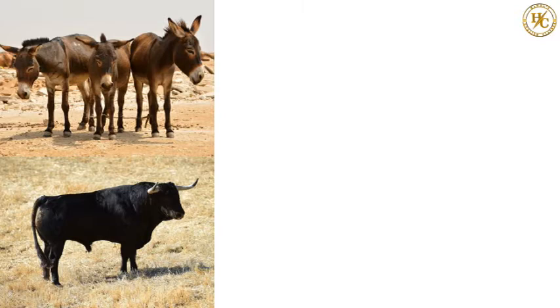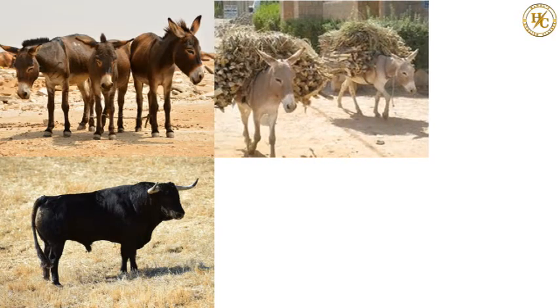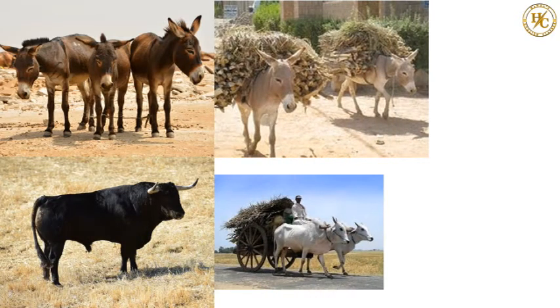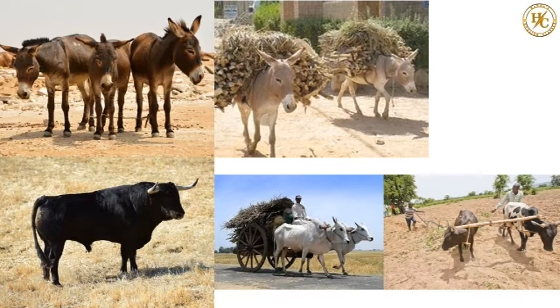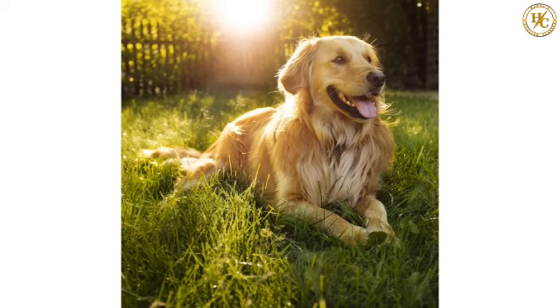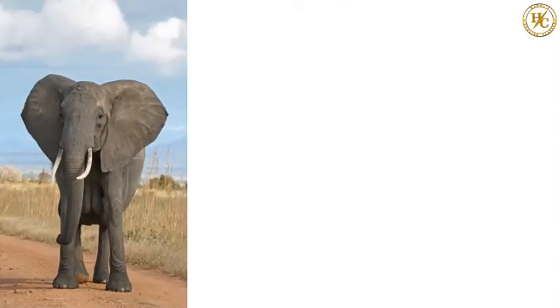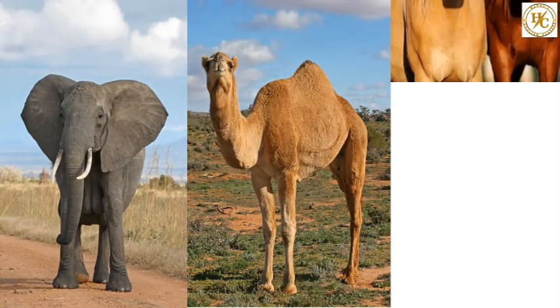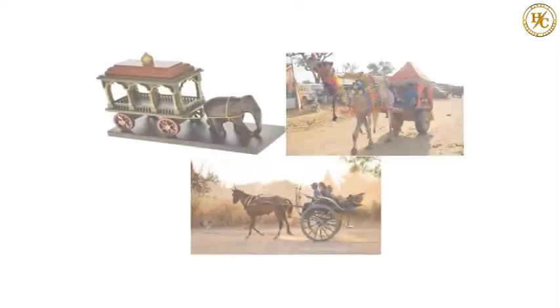Animals like donkeys and bulls are useful for carrying burdens, drawing carts and doing heavy farm work in fields. Dogs are useful for guarding our houses. Several other animals such as elephants, camels and horses are useful for travelling.